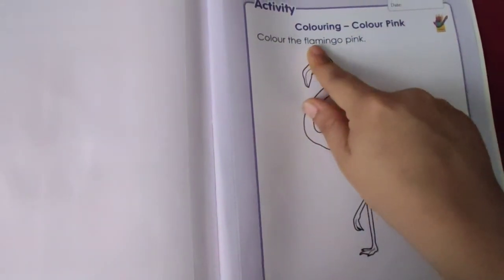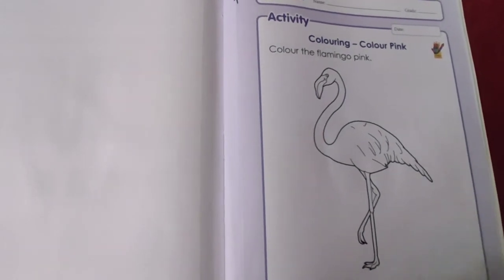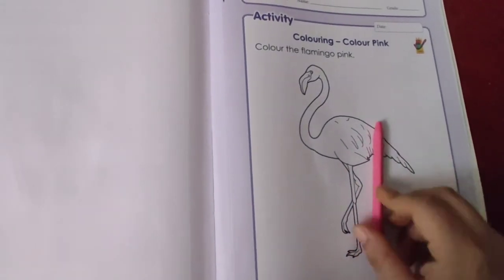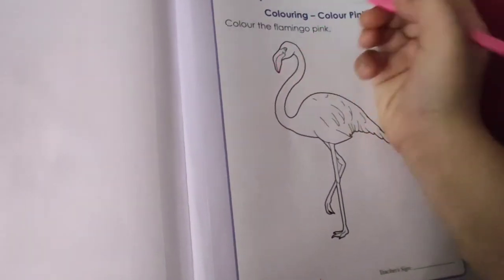As you can see it is written over here. So what you have to do, you have to color this picture with pink color crayon. See, I am having pink color crayon and now I will use this and we will color. Okay? Here.